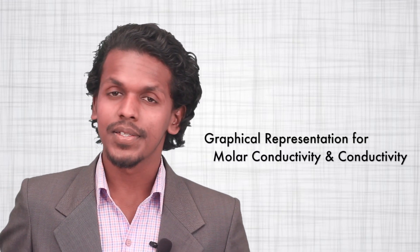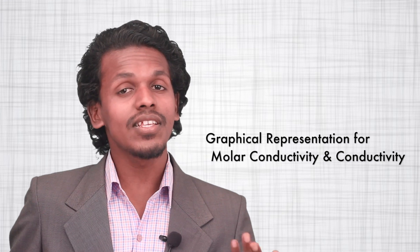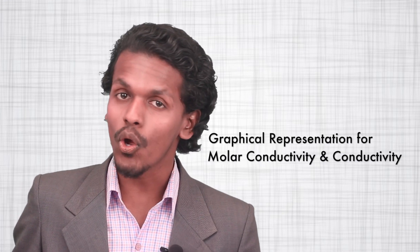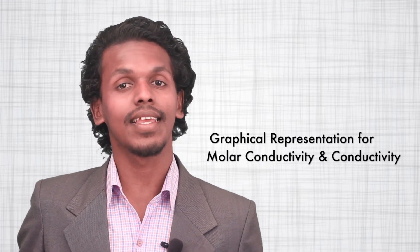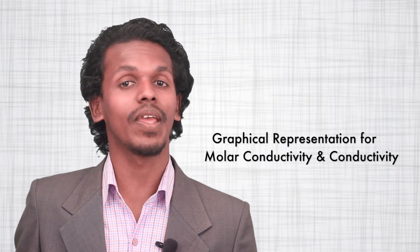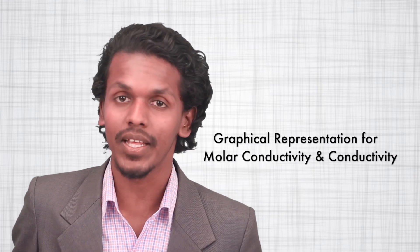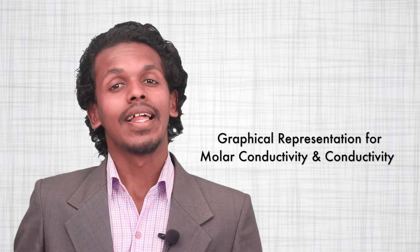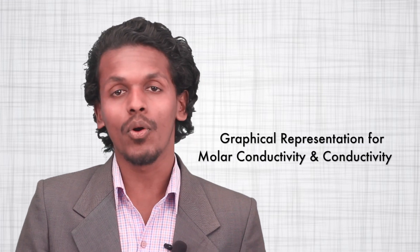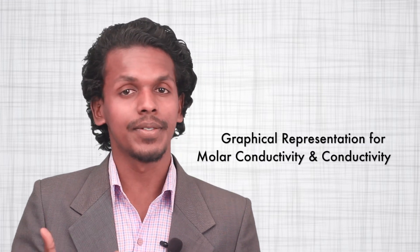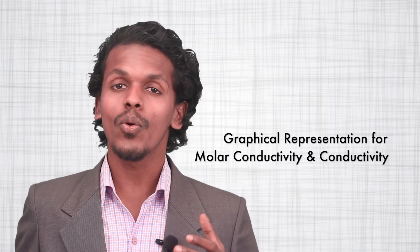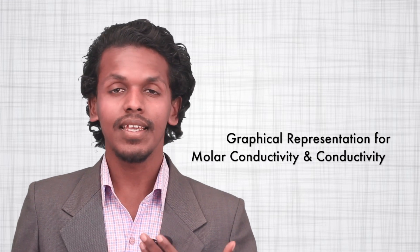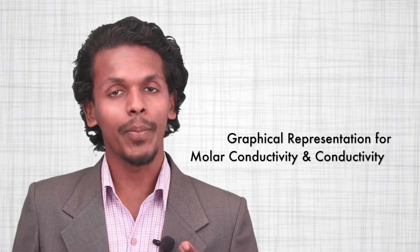Hello friends. In the last lecture we studied that the molar conductivity of a strong electrolyte can give us a maximum limiting value which is known as lambda naught. Let us see more about the strong electrolyte and how it would be very helpful in determining this maximum limiting value.